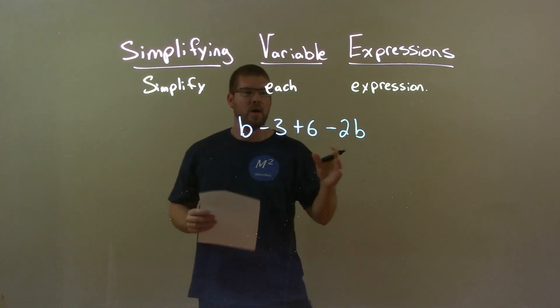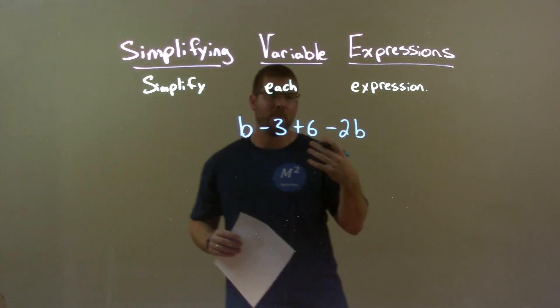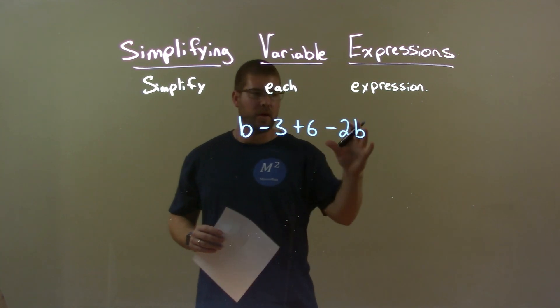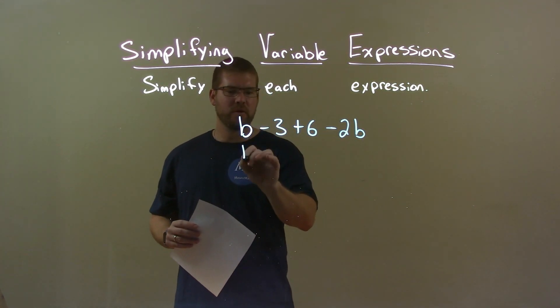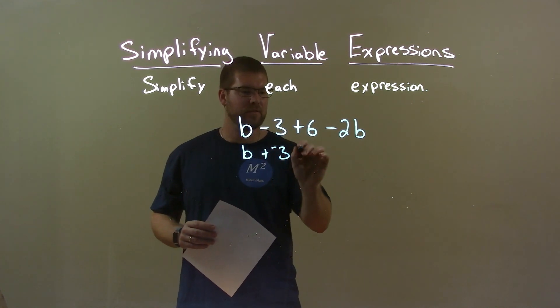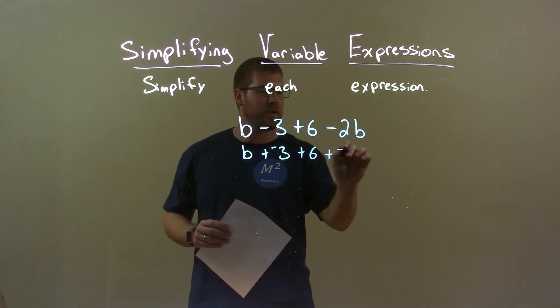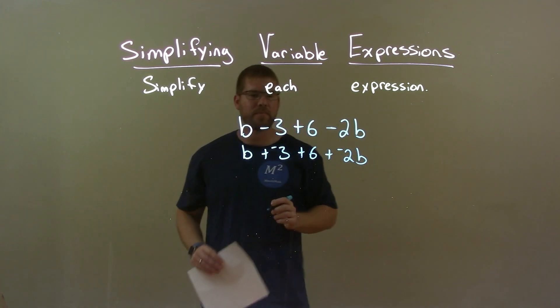Well the first thing I like to do is put all my variables together and all my numbers together and rearrange them. So to do that I actually first we'll convert all these to be plus a negative. I find it easier. So all subtractions I make it plus a negative like so, okay?